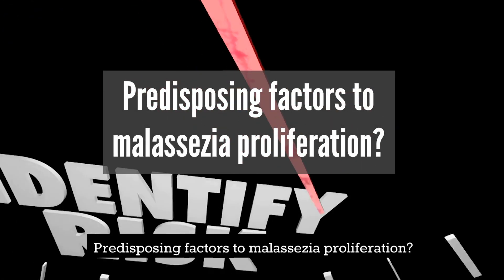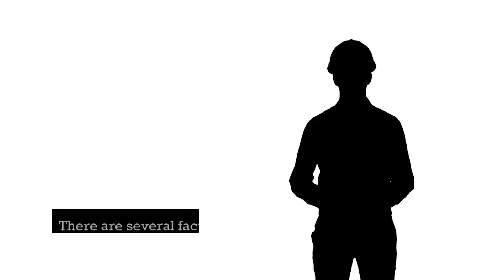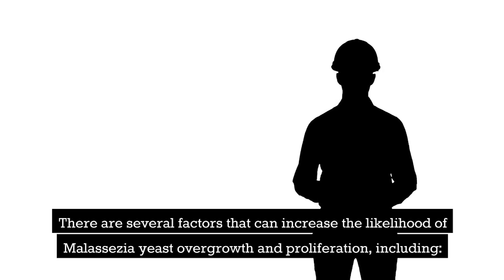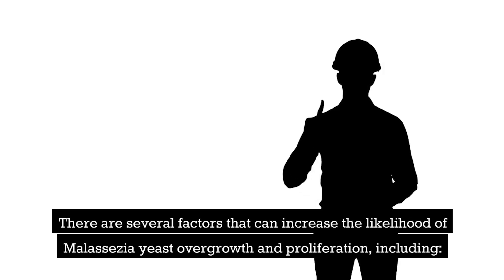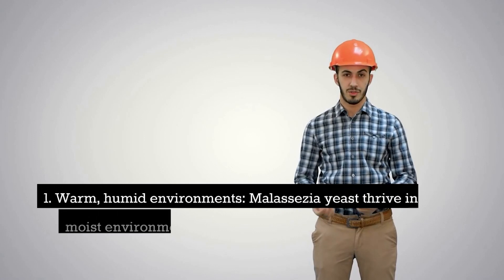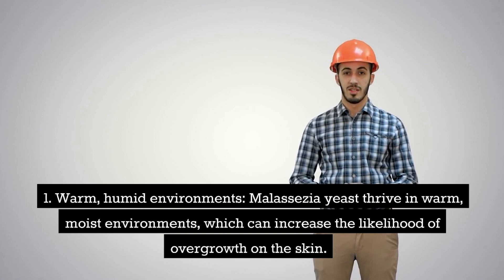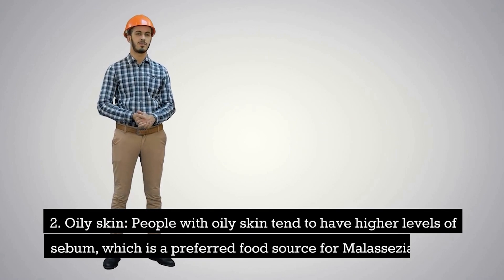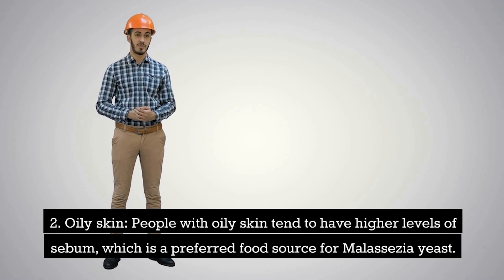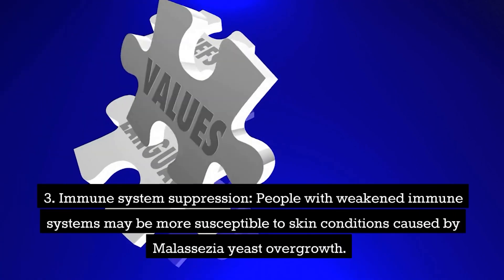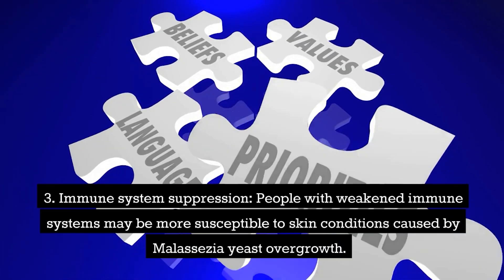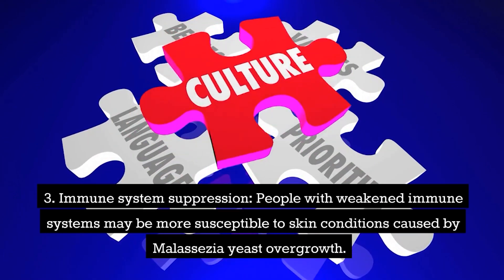Predisposing factors to Malassezia proliferation: there are several factors that can increase the likelihood of Malassezia yeast overgrowth, including warm, humid environments, as Malassezia yeast thrive in warm, moist conditions which can increase the likelihood of overgrowth on the skin. People with oily skin tend to have higher levels of sebum, which is a preferred food source for Malassezia yeast. People with weakened immune systems may also be more susceptible to skin conditions caused by Malassezia yeast overgrowth.